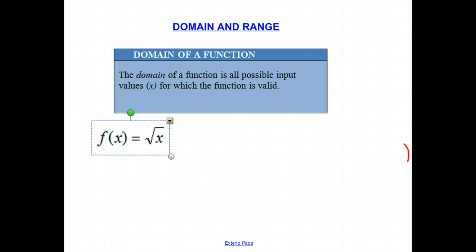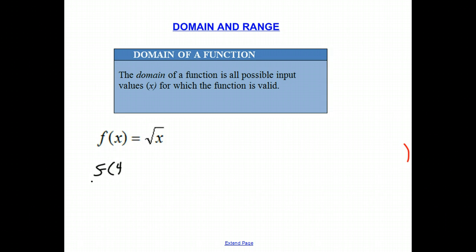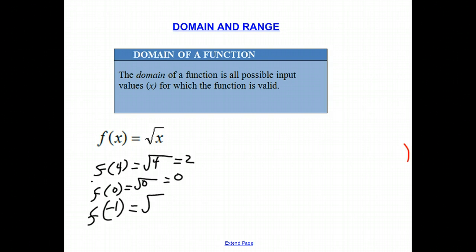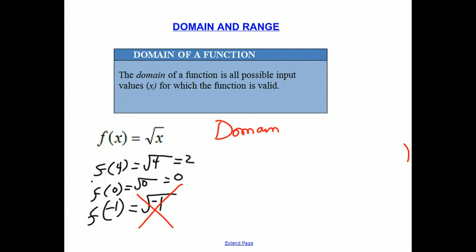Let's try one more. Here's another function: f of x equals the square root of x. f of 4 would be the square root of 4, which is 2 — that's valid. You could even have f of 0, which is the square root of 0, which is 0. But the minute you put a negative number in there, like negative 1, you are not allowed to have the square root of a negative number — it's undefined. So the domain of this function is all values for x that are greater than or equal to 0.